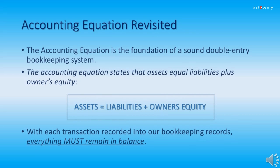Here we review the accounting equation. The accounting equation is the foundation of a sound double entry bookkeeping system. The accounting equation simply states that assets equal liabilities plus owner's equity. With each and every transaction recorded into our bookkeeping records, everything must remain in balance. And hopefully that is starting to make sense — it should with these next few exercises.